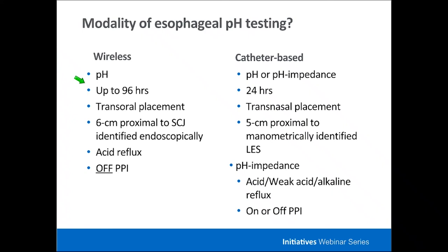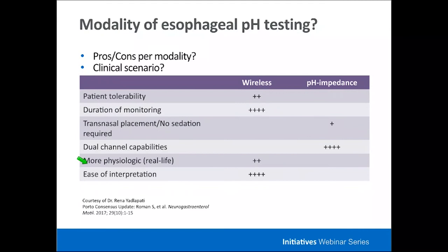There are two primary modalities of esophageal pH testing: a wireless-based test and a catheter-based test involving transnasal placement. With wireless pH testing, only pH can be assessed, whereas catheter-based pH impedance allows for more than just pH through its impedance component. Wireless testing provides longer testing duration, is placed transorally typically requiring endoscopy, and is performed off of anti-acid suppressive therapy. Choosing between modalities requires individual assessment based on the clinical scenario.